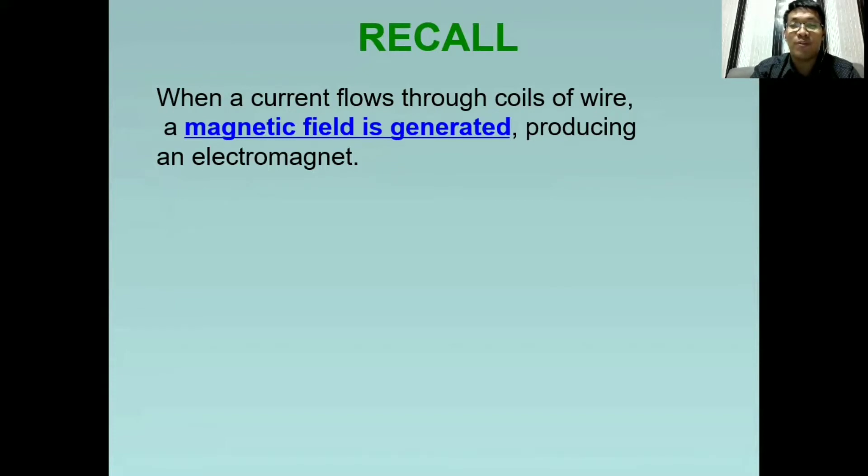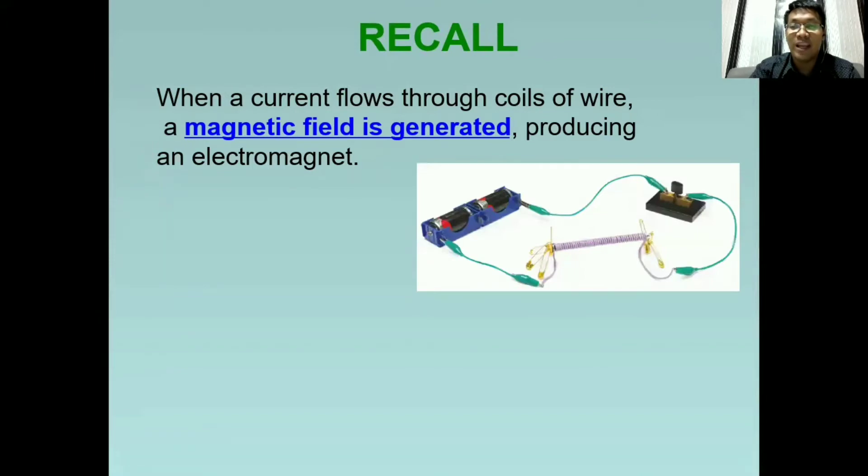Let's have this picture for example. Kung nakikita ninyo, nakakonect tayo sa dalawang battery at merong switch at meron tayo ditong wire. Nang dumadaloy na ang kuryente, may kita ninyo na na-attract yung mga pins dito sa wire na ito. Anong indication nun? Kapag may dumadaloy na kuryente sa isang konduktor, ibig sabihin ay nakakaproduce din ito ng magnetic field. At ayun ang rason kung bakit na-attract ang mga pins na ito dito sa ating wire.